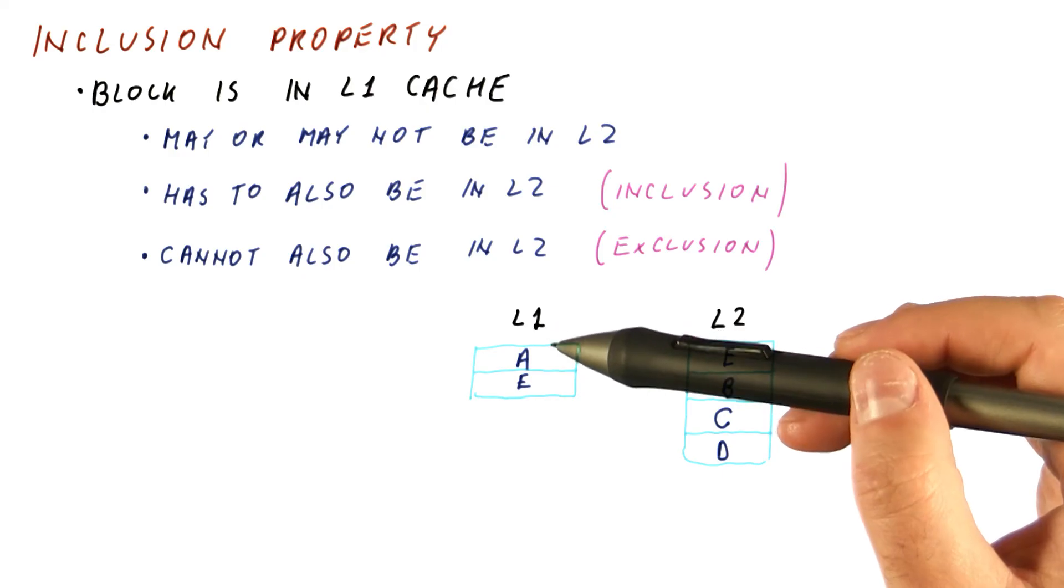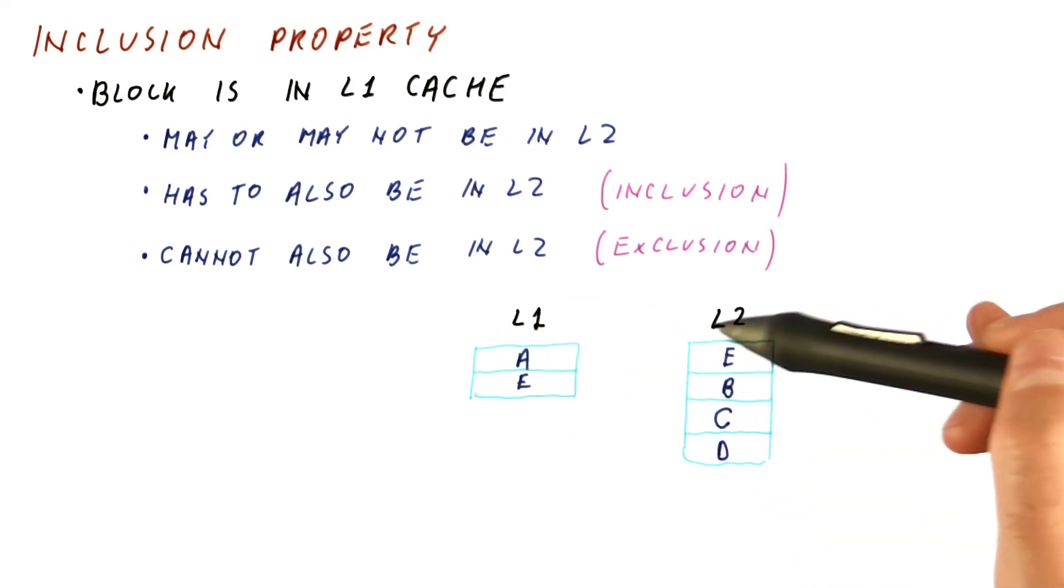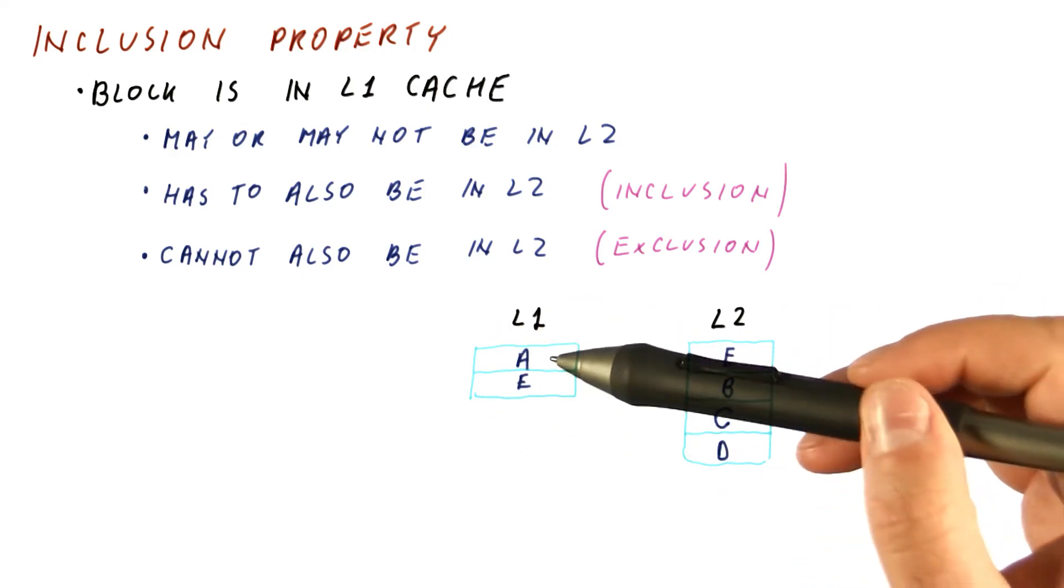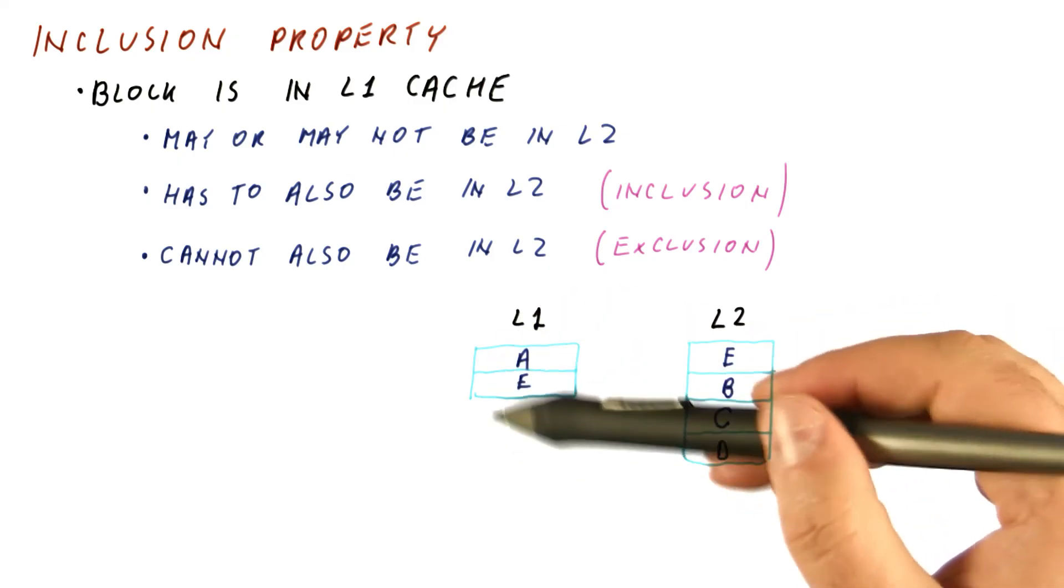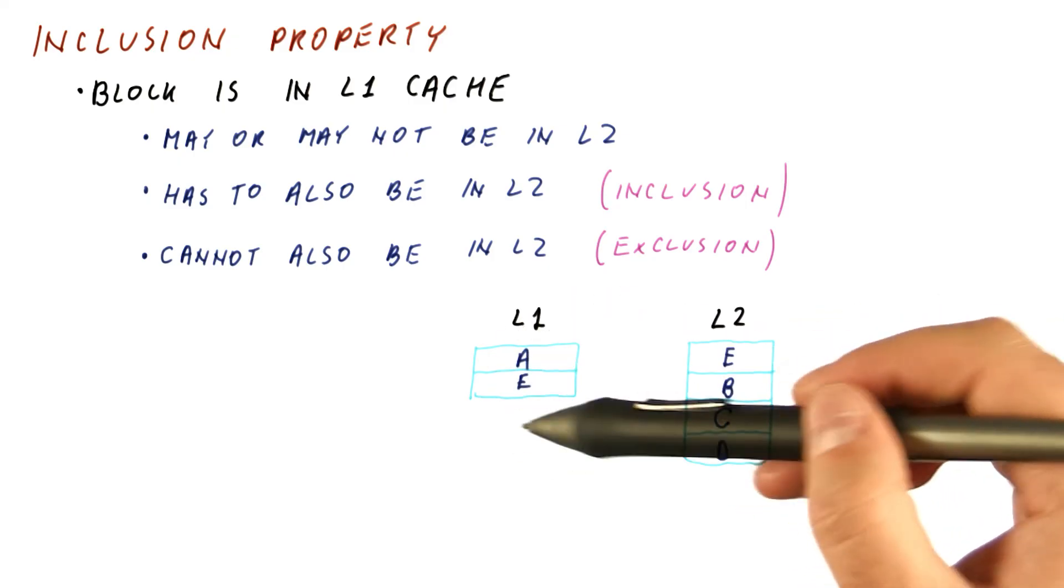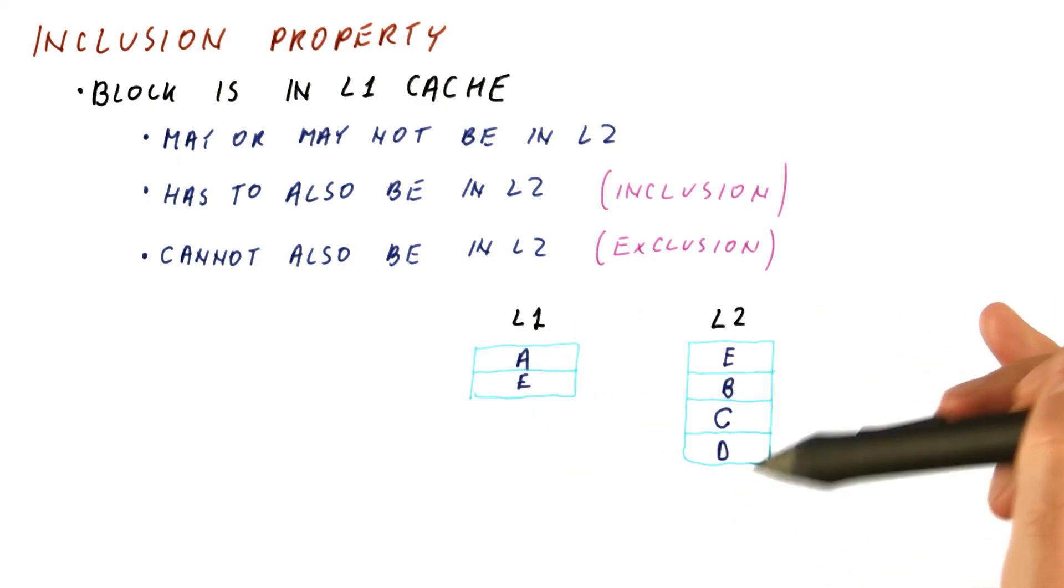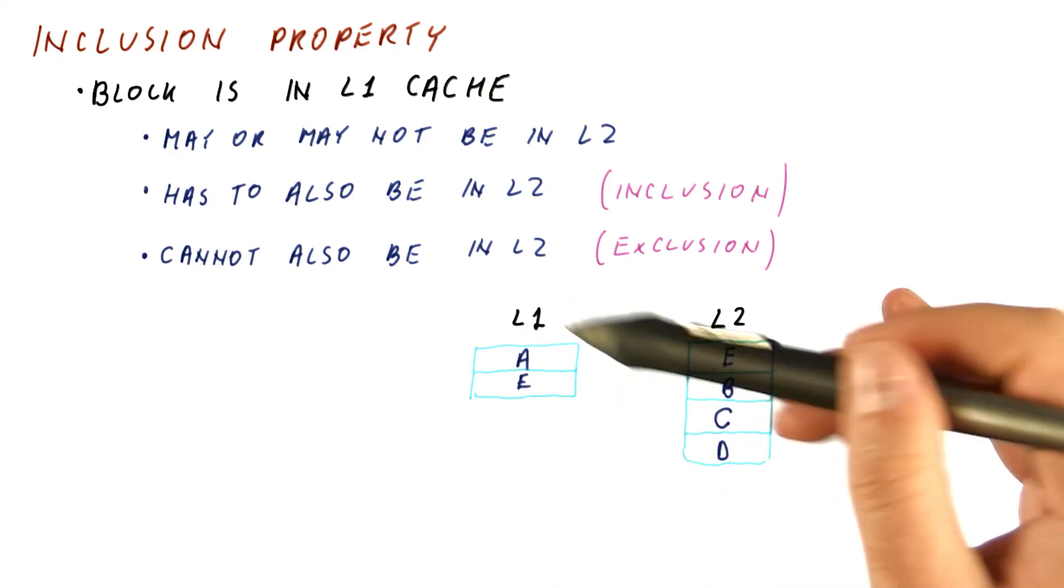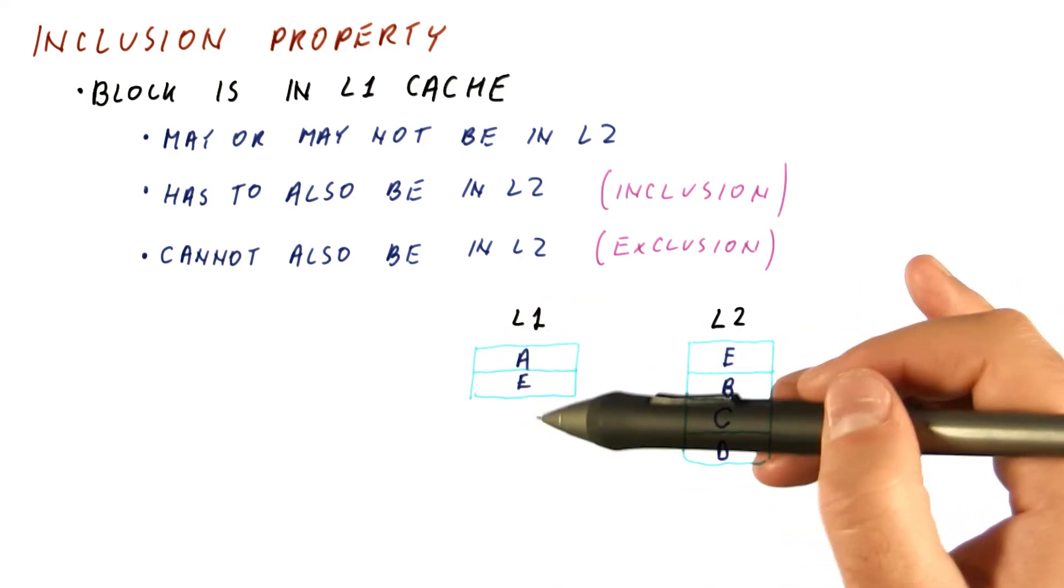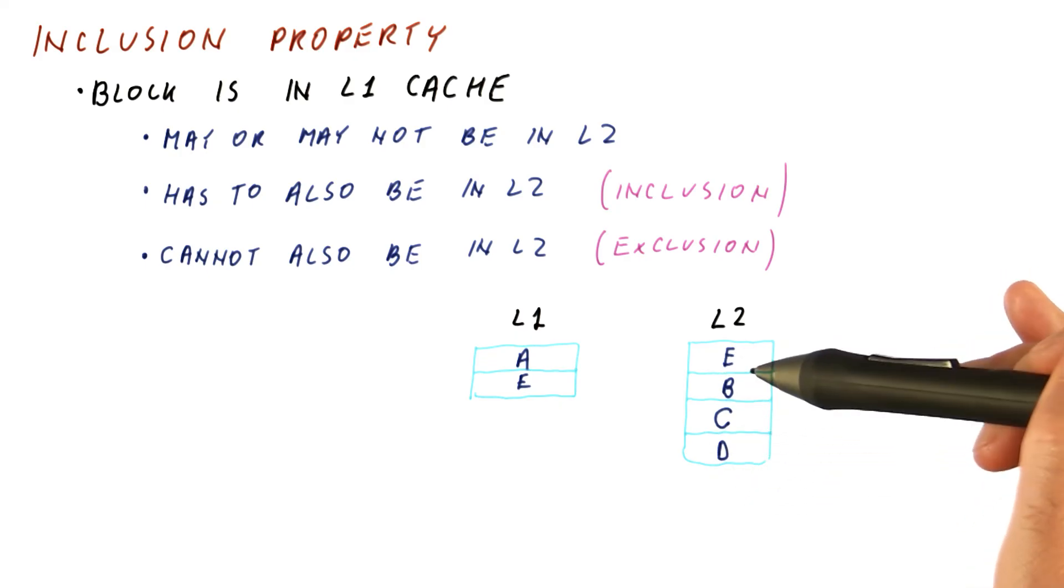So inclusion does not necessarily hold when you have a cache hierarchy, because things that are frequently accessed in the L1 cache will not be frequently accessed in L2, because all of the accesses to that block are going to L1 and the L2 never sees them, so eventually that block gets replaced from L2.